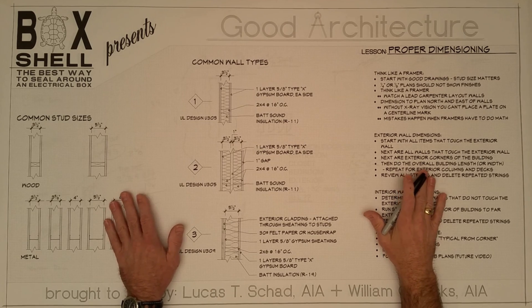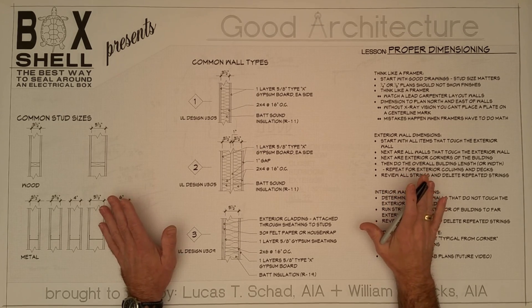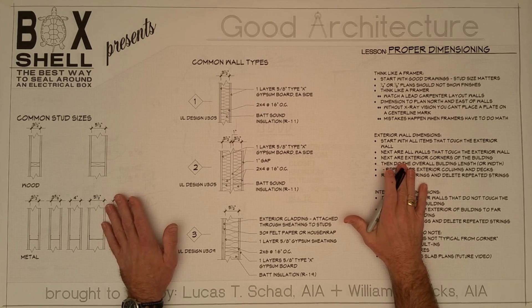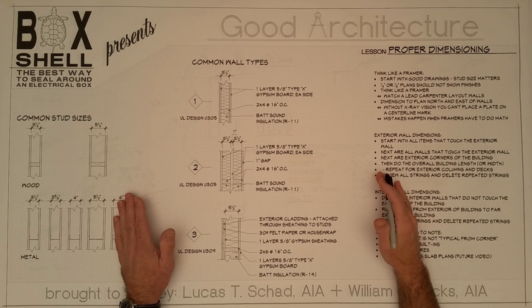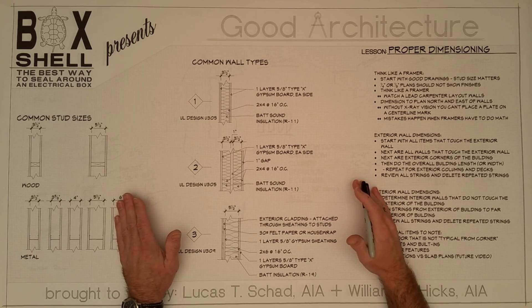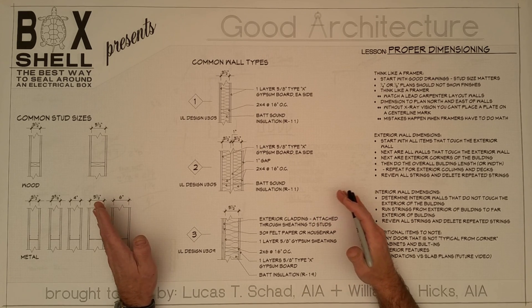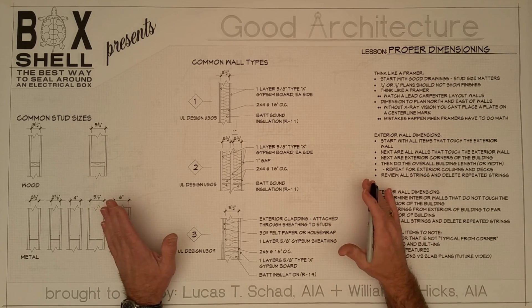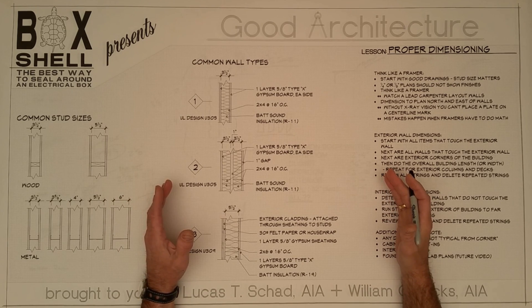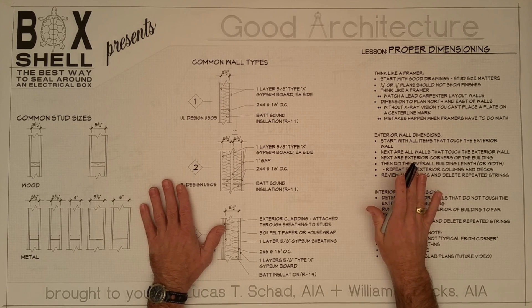Proper dimensioning of a floor plan starts with accurate drawings. What I mean by accurate drawings is a framing plan is something for the framer to work from and lay out all the structural members of a home, as well as window and door openings, and any other item involved in creating the skeleton of the house. In order to do that, we have to start with good drawings.